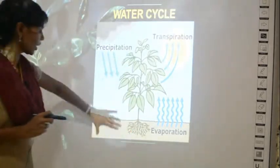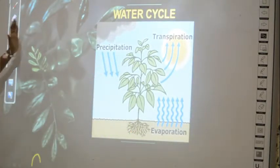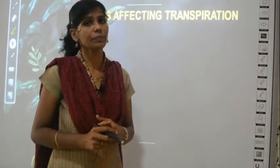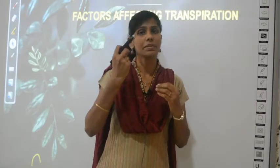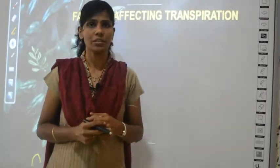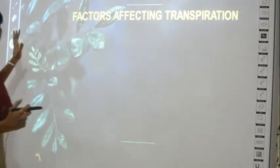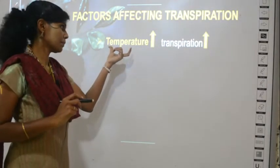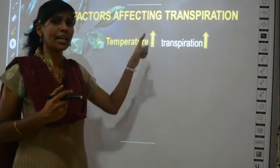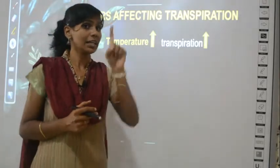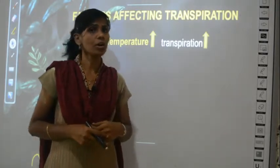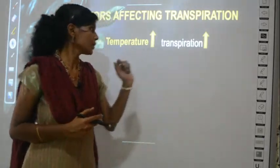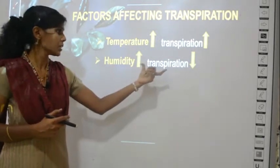Those are all the uses of transpiration. Now the last topic: factors affecting transpiration. There are five factors. The first factor is temperature — when temperature increases, transpiration also increases. The upward arrow means increases; a downward arrow means decreases.